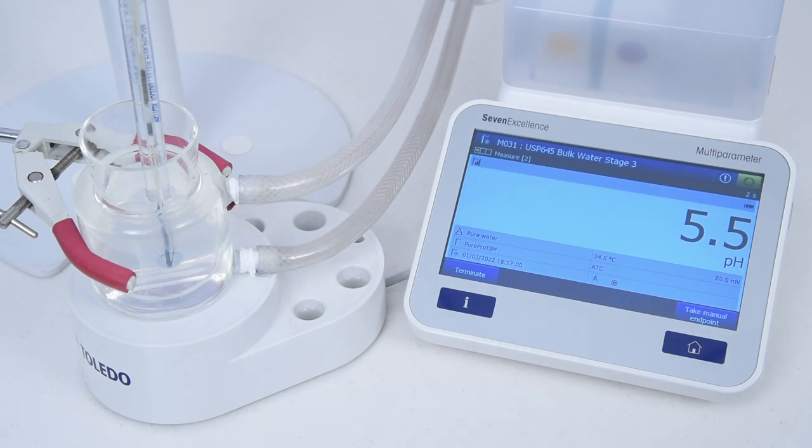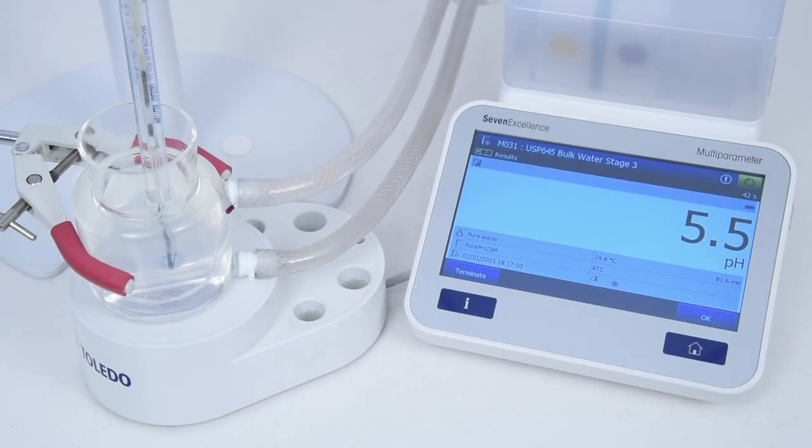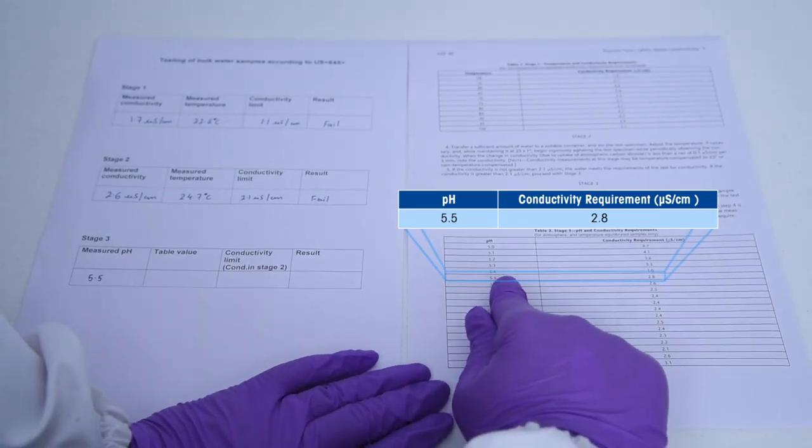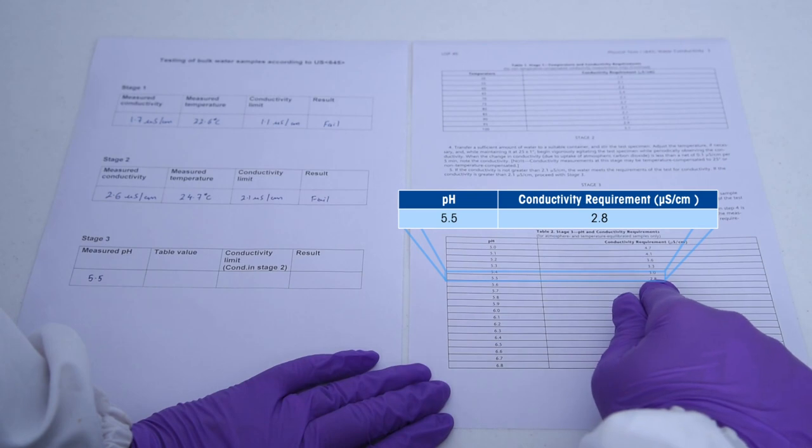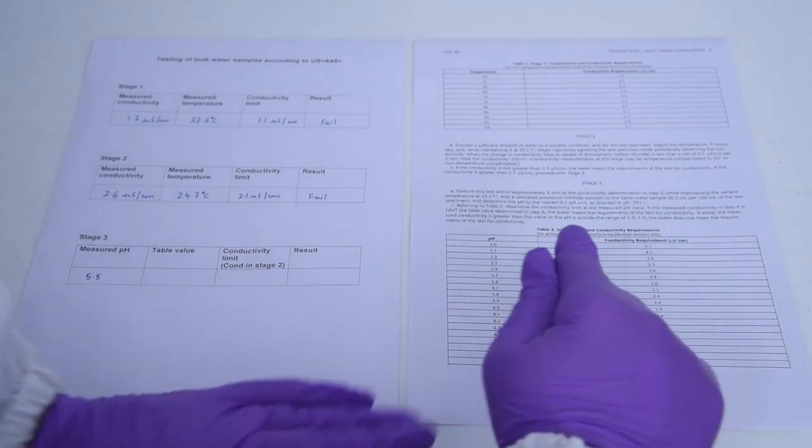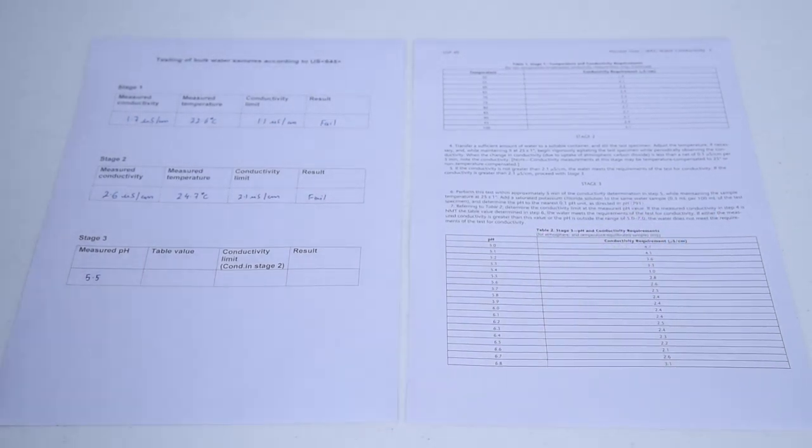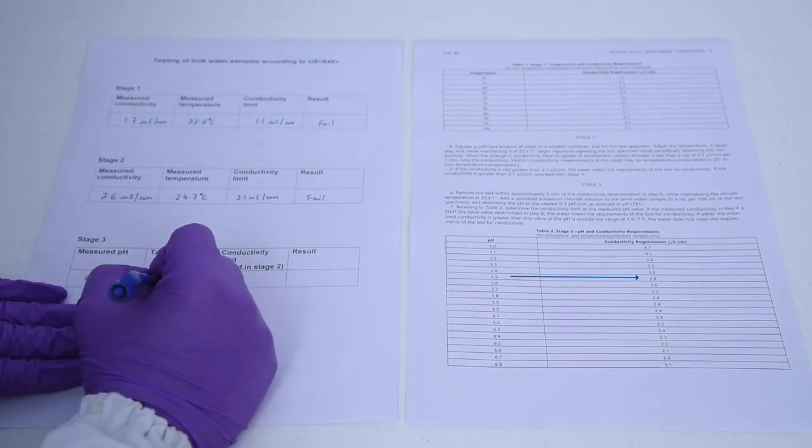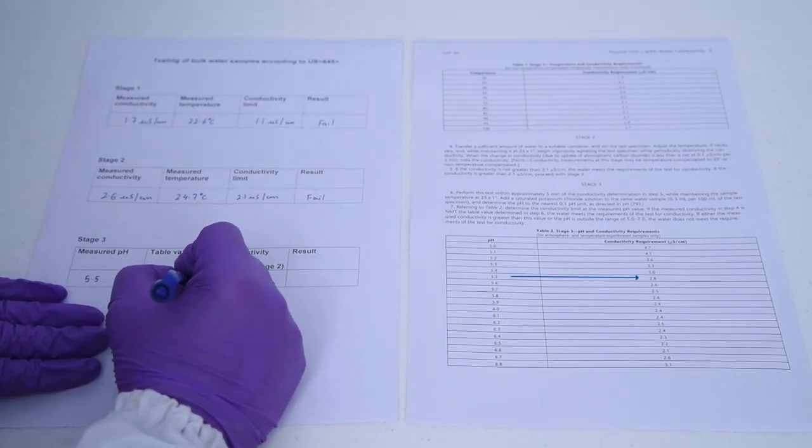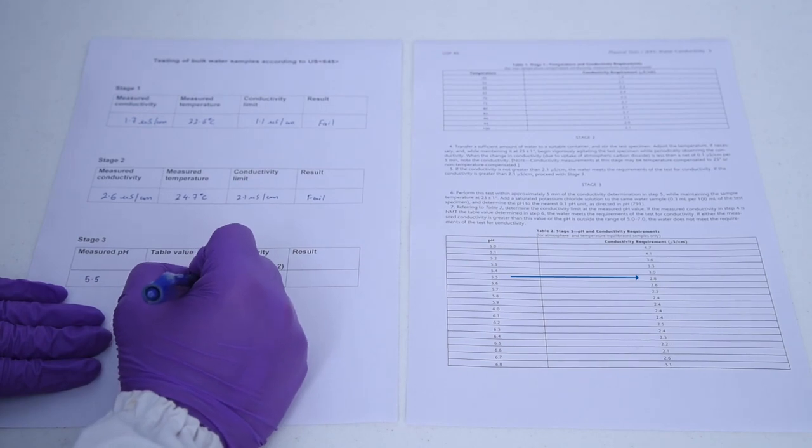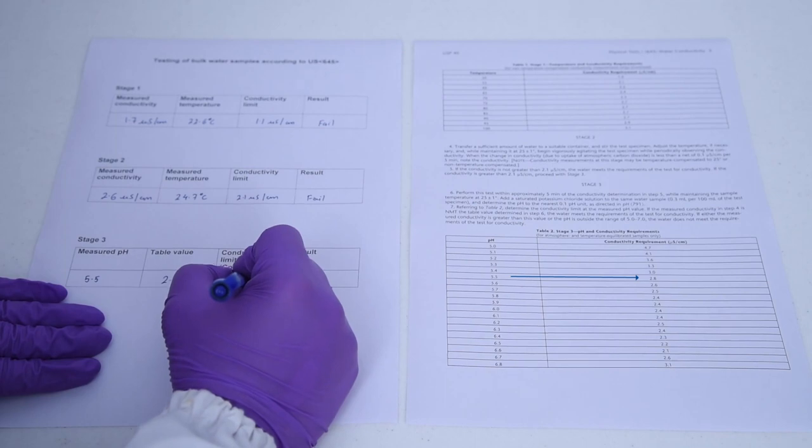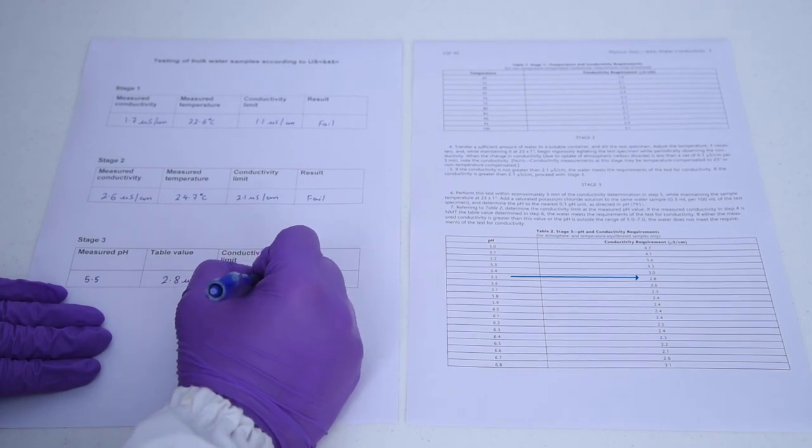From the reference table, determine the limit conductivity value at the measured pH. If the conductivity value measured at stage two is less than the value determined from the table, the water meets the requirements of the test for conductivity. If the conductivity value is bigger than that, or if the pH is outside 5.00 to 7.00, then the water does not satisfy the requirements of USP 645.